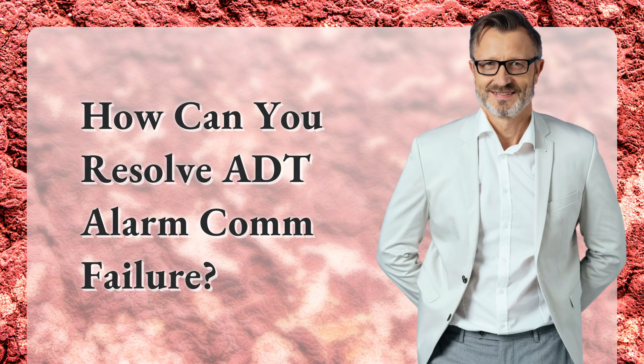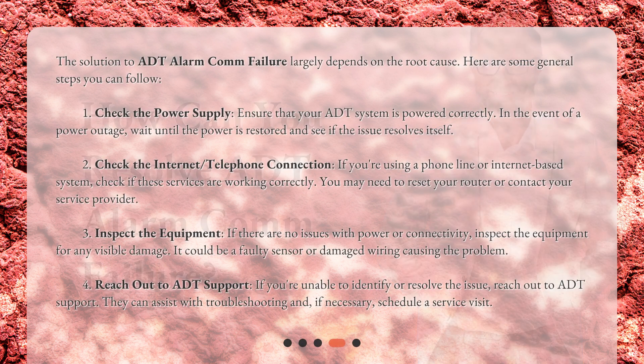How can you resolve ADT alarm comm failure? The solution largely depends on the root cause. Here are some general steps you can follow. First, check the power supply — ensure that your ADT system is powered correctly. In the event of a power outage, wait until the power is restored and see if the issue resolves itself.